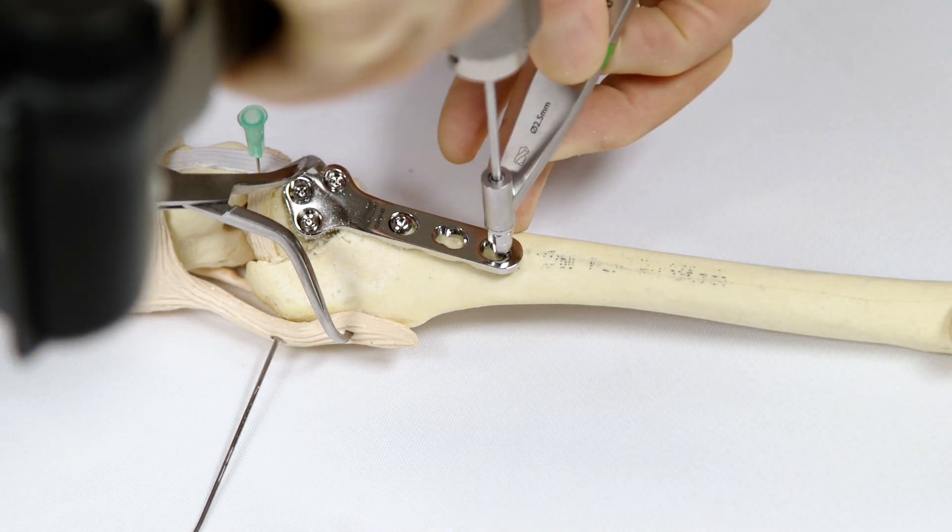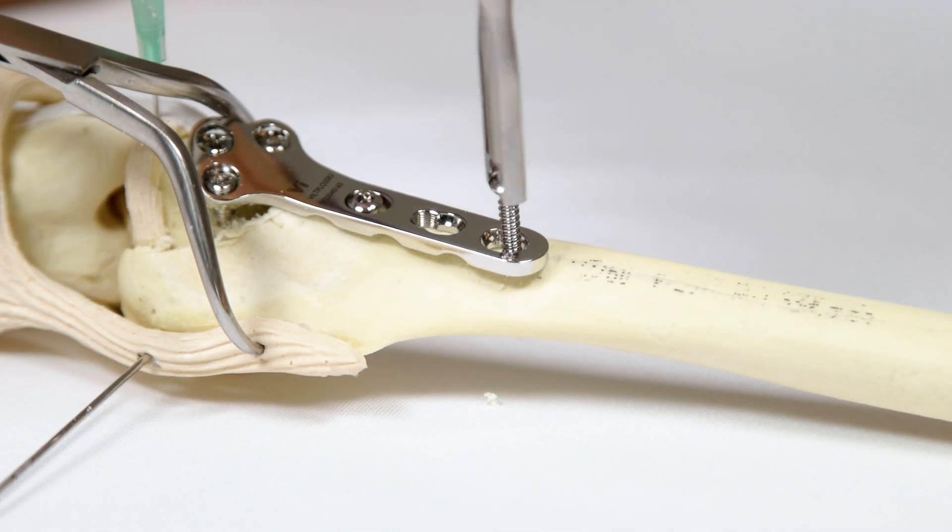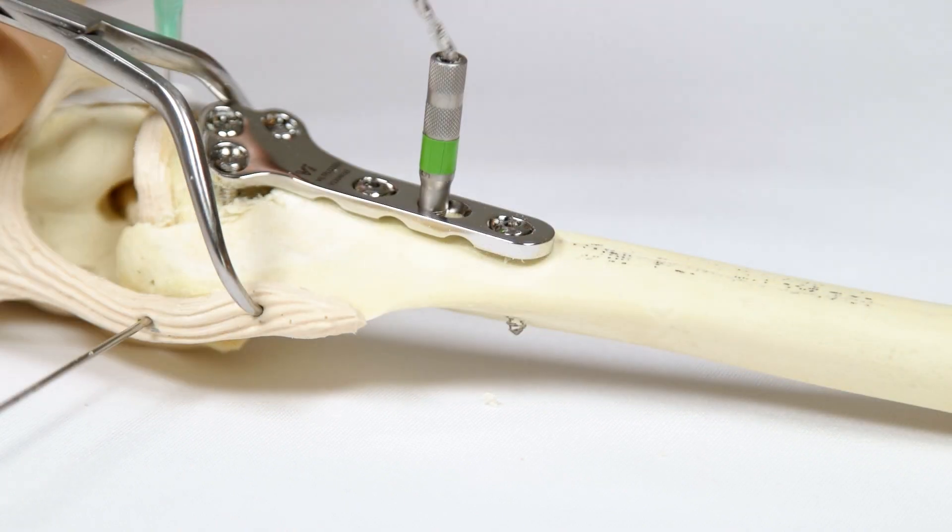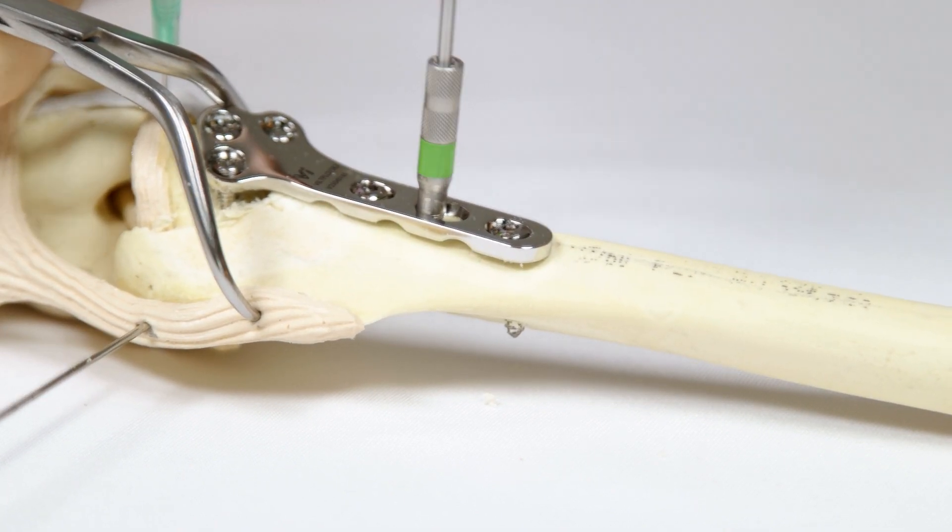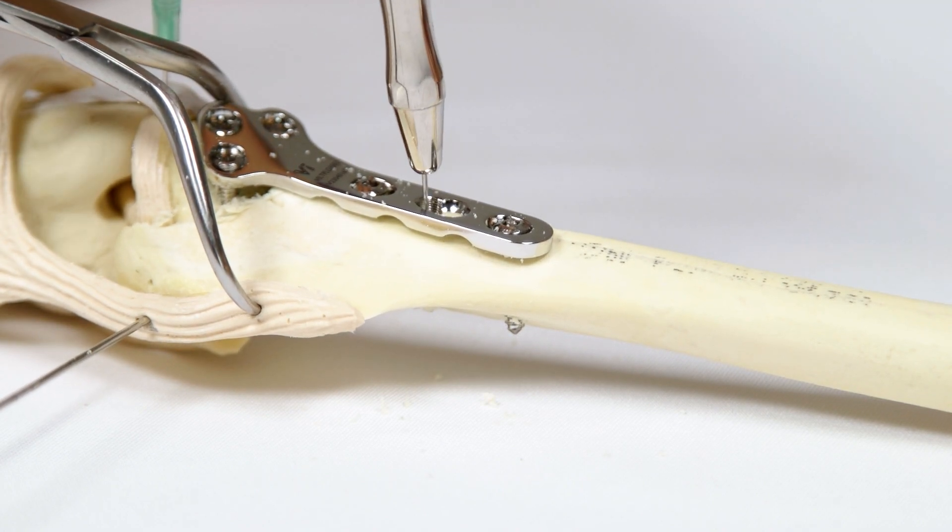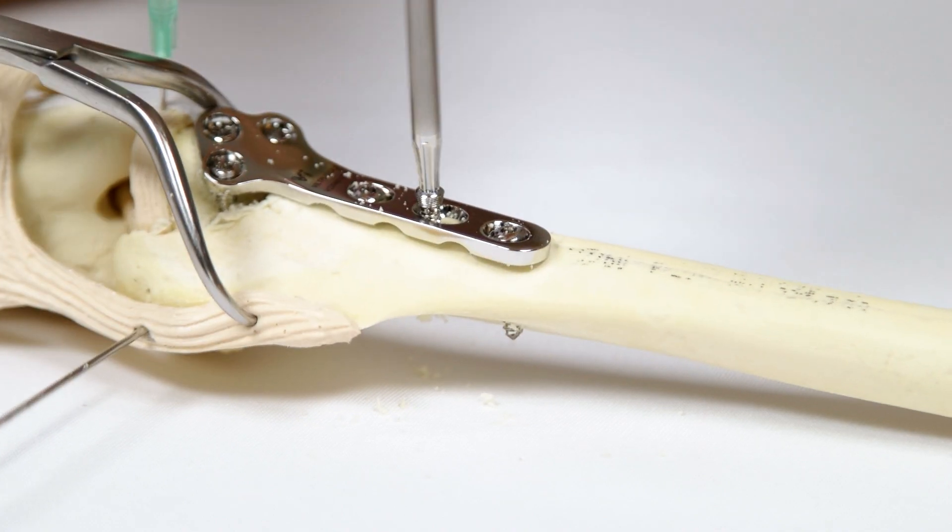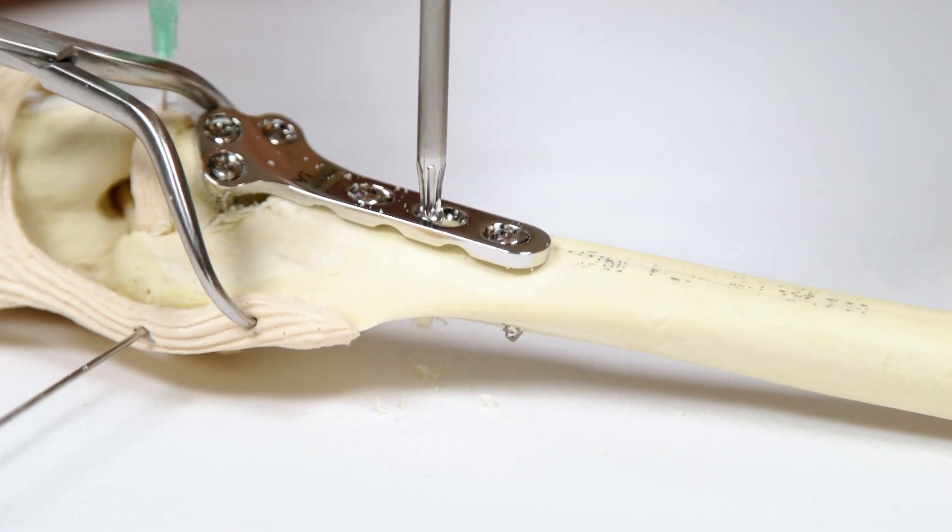The most distal screw in the plate is then placed. A cortical screw in axial compression mode is used here. Finally, the remaining screw is placed in the straight section of the plate. This plate hole can accept either a locking or a cortical screw. It is recommended that a locking screw is placed here for maximum construct security.